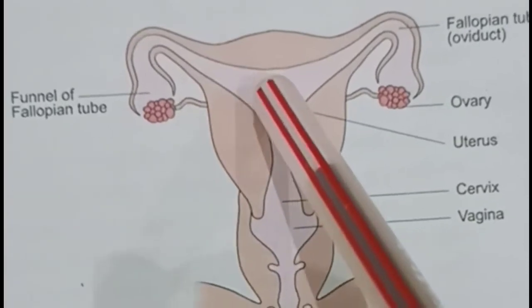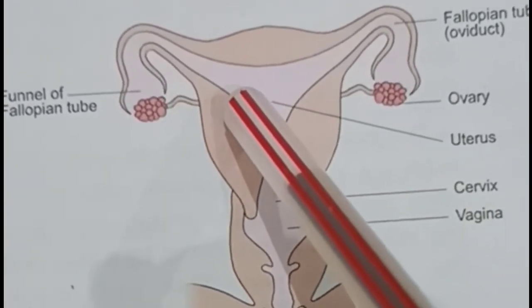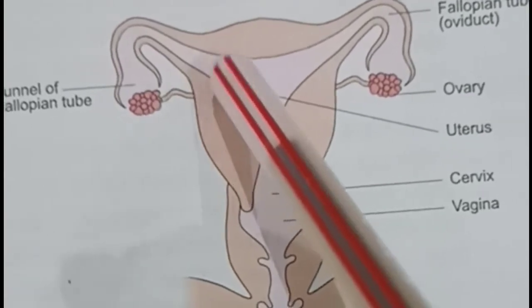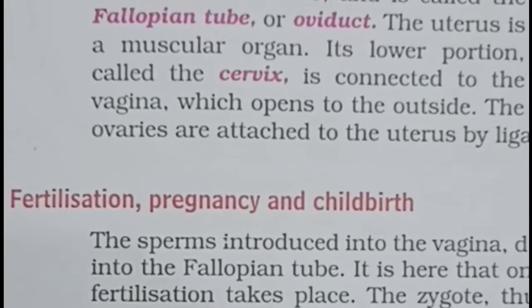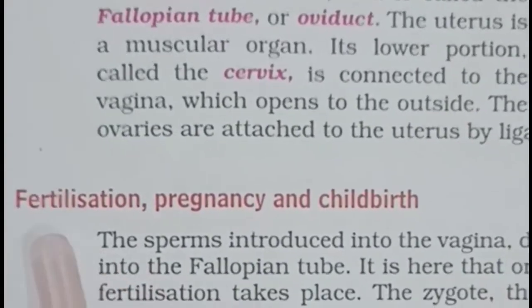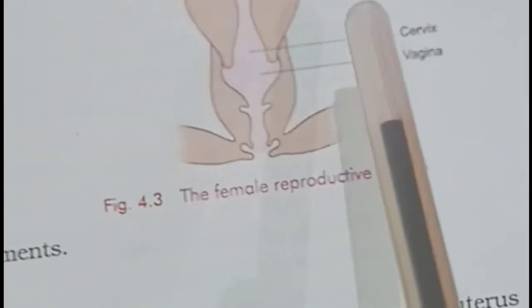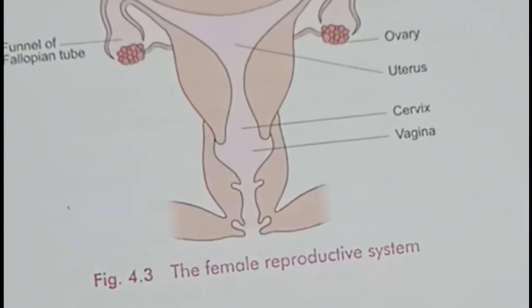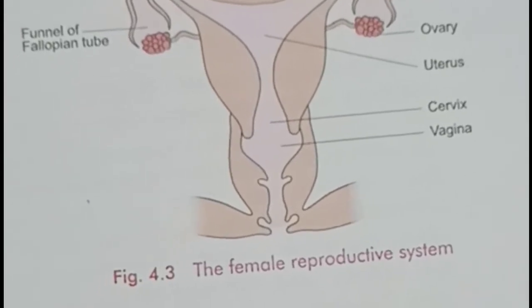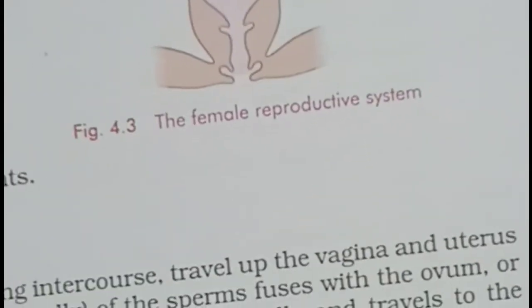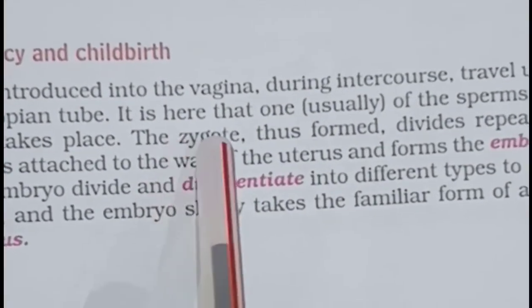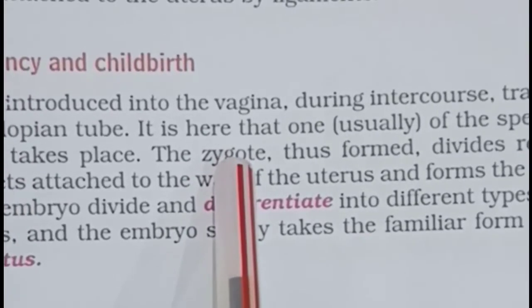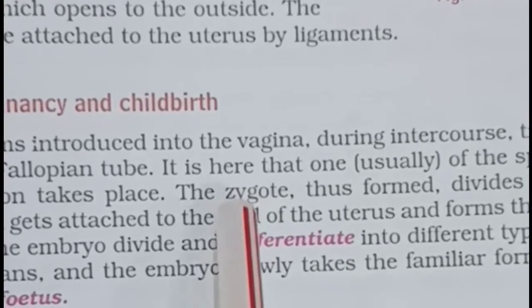After fertilization, implantation takes place in the uterus. Fertilization is the fusion of the male gamete and the female gamete. Once fertilization has taken place, it forms the zygote. The zygote is the cell formed by the fusion of the male gamete and the female gamete.